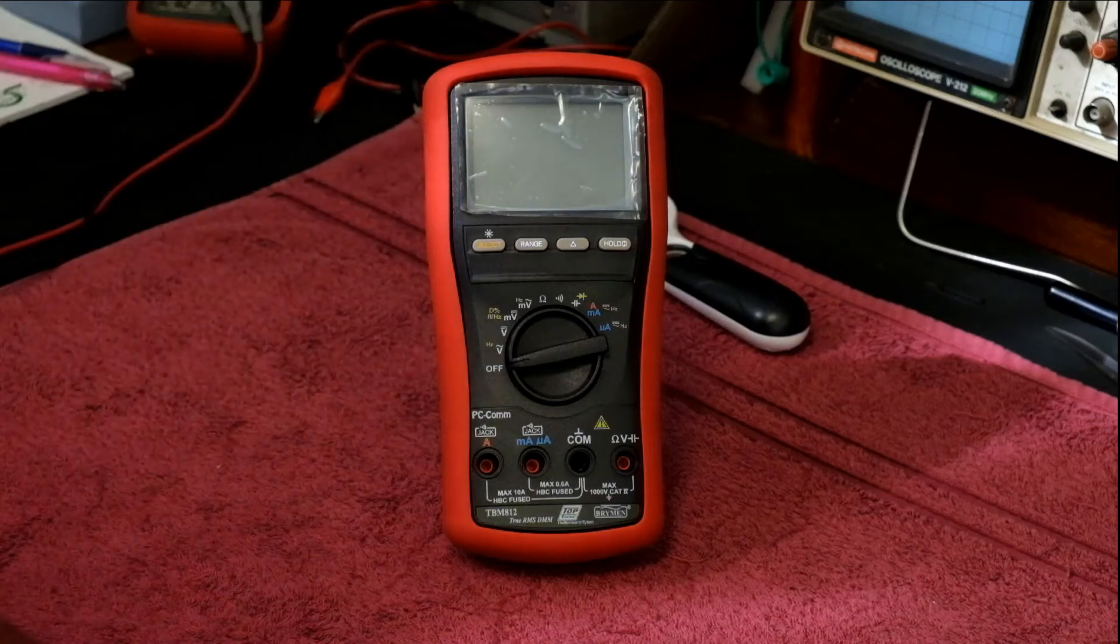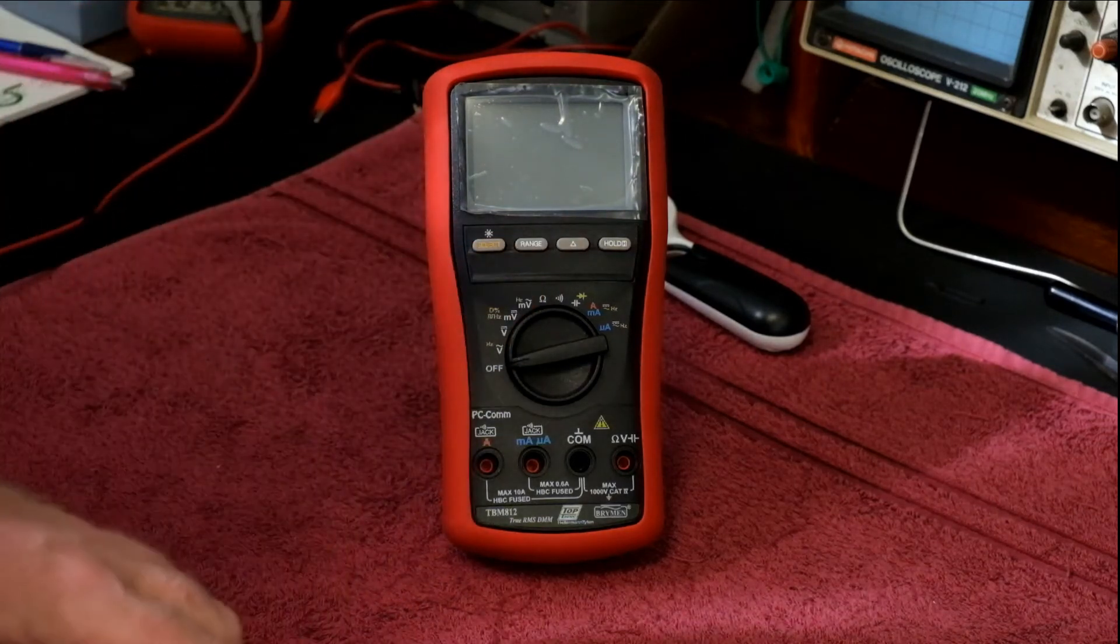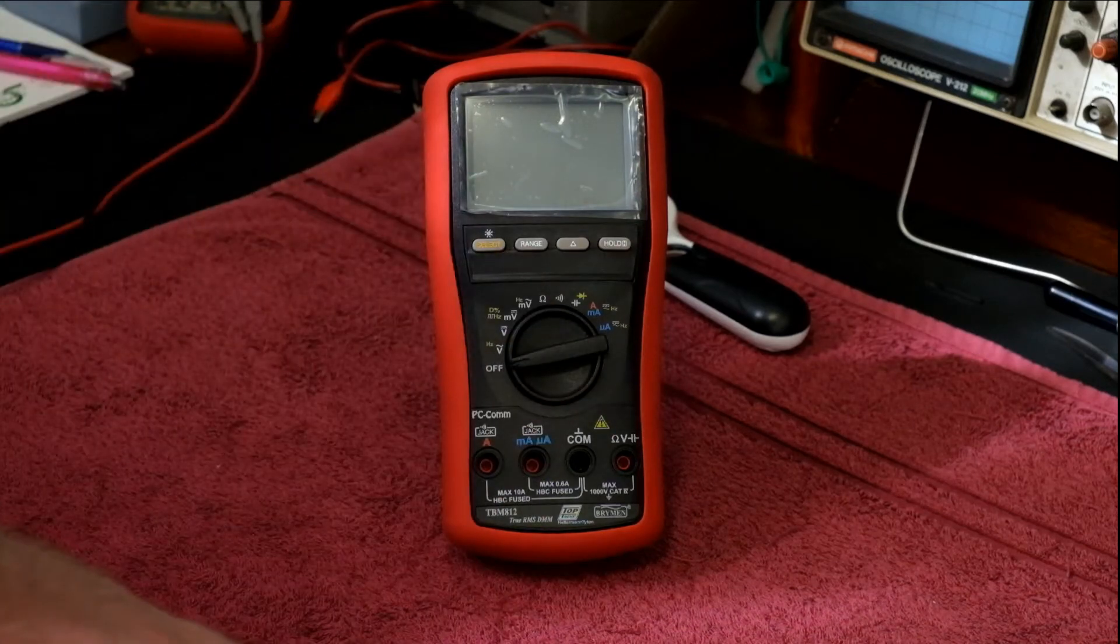The only difference is the 812 does have the feature to remove your lead resistance. Let me just grab a set of leads and I'll show you guys.